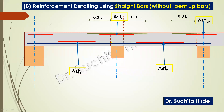While showing this reinforcement detailing in the continuous slab, I have not shown the distribution steel for simplicity. However, transverse distribution steel is present in the perpendicular direction, which can be seen in the form of dots at both the bottom and top levels in the section.